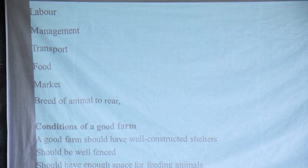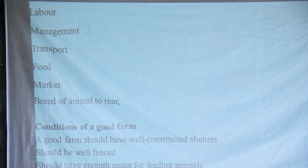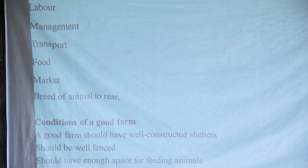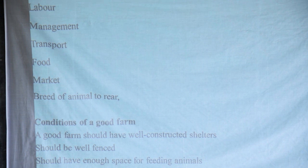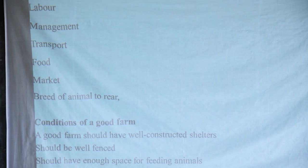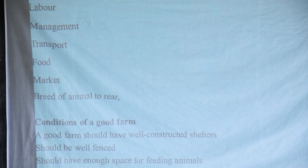Then consider management — you should have the administration in place and know how these animals will be managed. This will help keep proper records. Some people begin farms with no management system, so record-keeping becomes very difficult. Transport is also very important. When starting a farm, consider whether it is easy to access, and how you will transport your products or produce to the market.